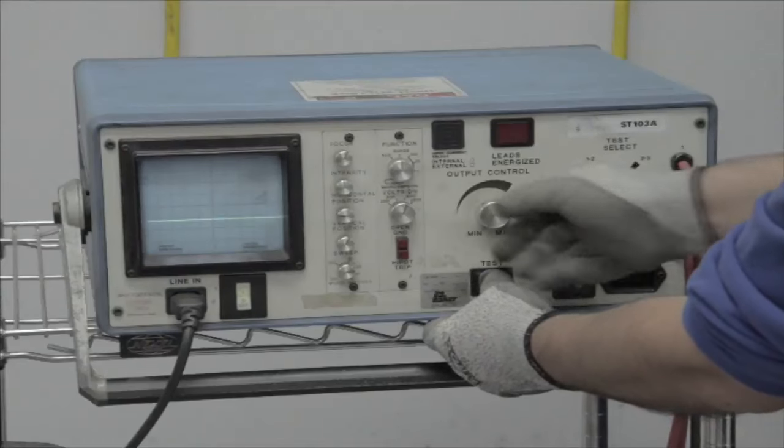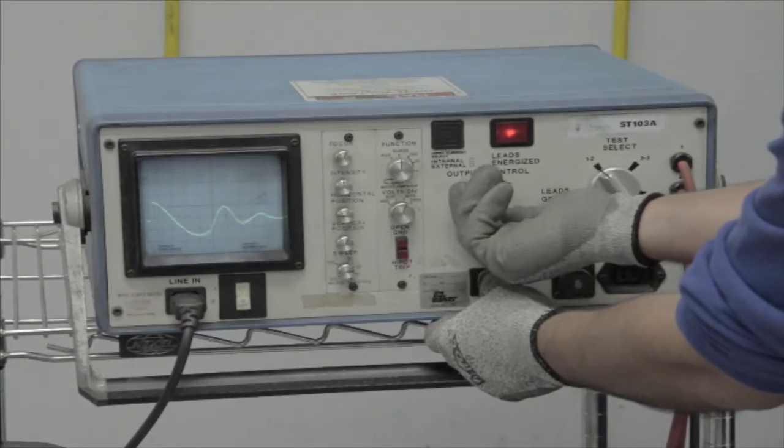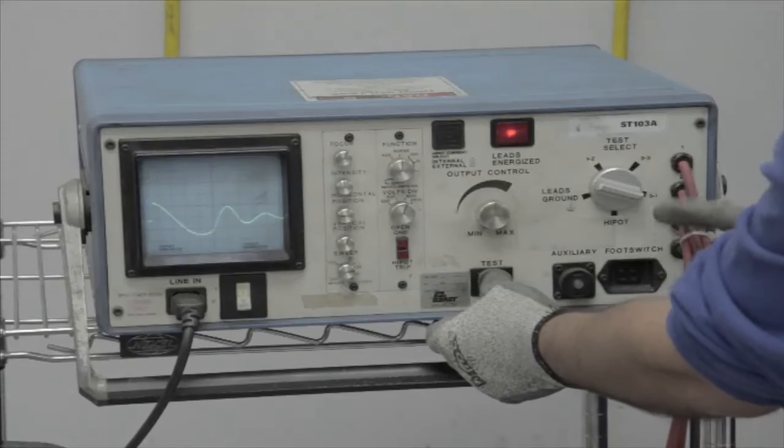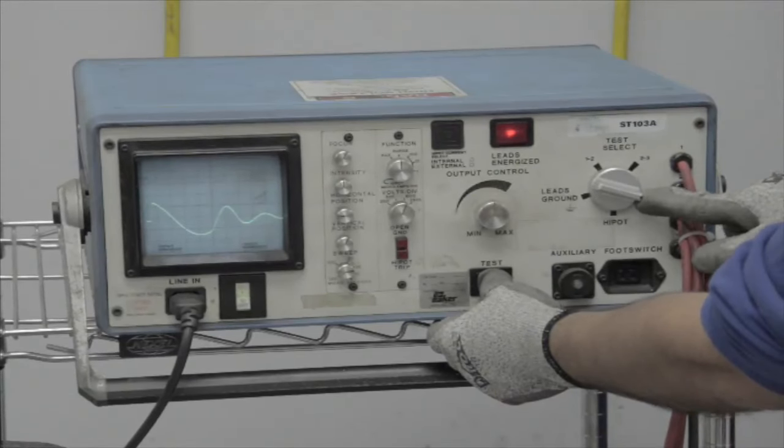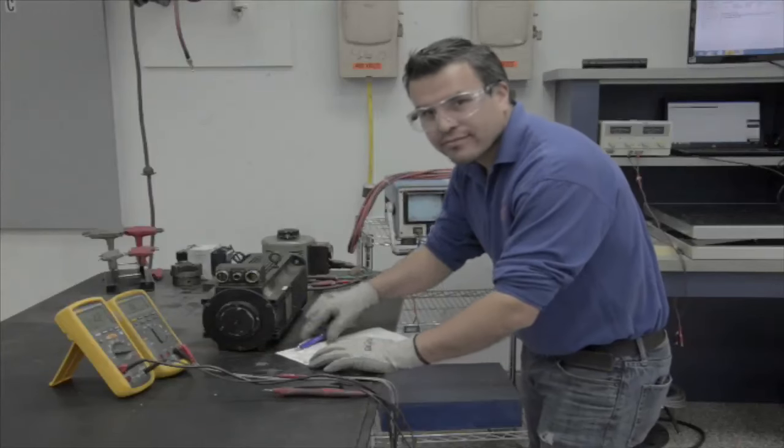As you can see on the screen of the surge tester, as the high voltage is applied, the readout from phase one to phase two is perfect, phase two to phase three is perfect, and phase three to phase one is also perfect. This motor does not need a rewind, however, if it did, we do have the capabilities right here in this facility to do a full rewind, even on servo motors.